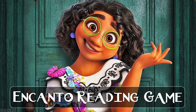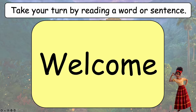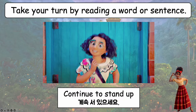This is the Encanto reading game. I am a big fan of using reading games in the classroom. What you do is get everybody to stand up, make an order — you could go from the front or the back — choose the student to go first, and then they take turns one by one. They have to read either a word or a sentence from the template. For example, we have a welcome — just click on the rounded rectangular box and that's going to reveal a picture behind.